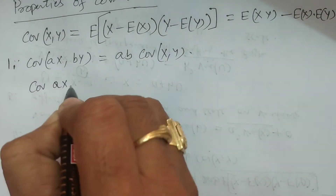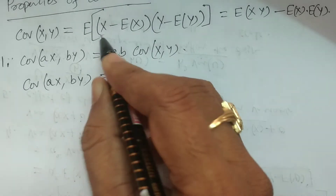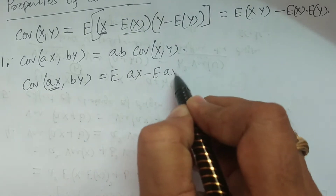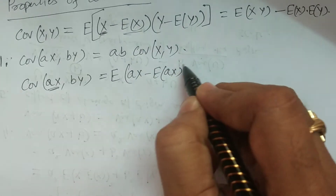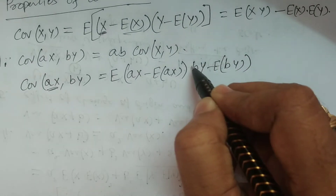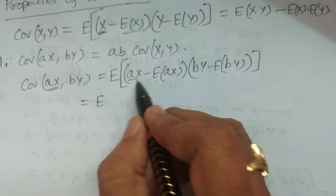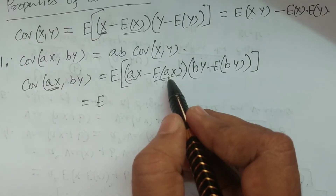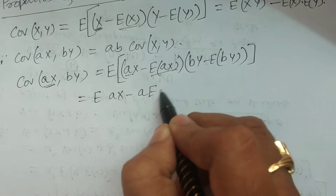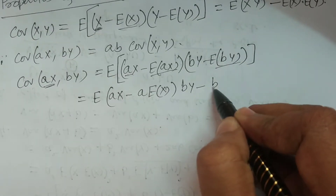Covariance of ax, by — it's equivalent to the formula: expectation of (ax minus expectation of ax) times (by minus expectation of by). Now, expectation of ax is a times expectation of x. So this becomes a times (x minus expectation of x). And expectation of by is b times expectation of y, giving b times (y minus expectation of y).